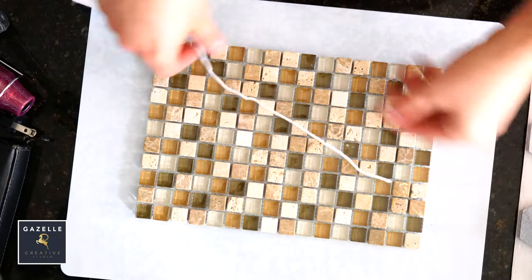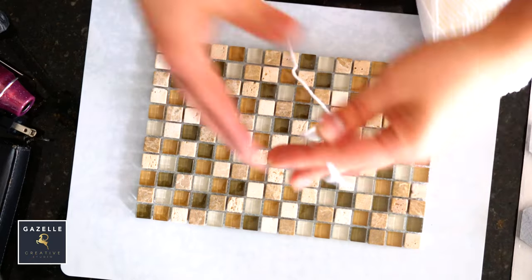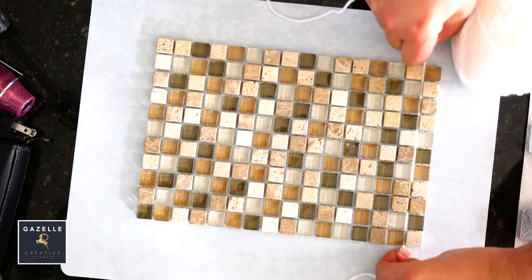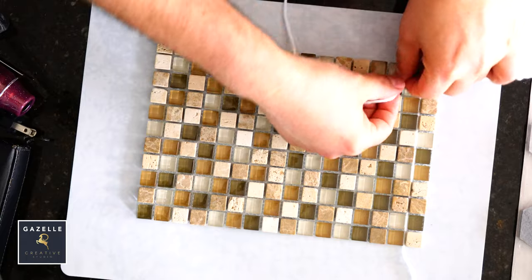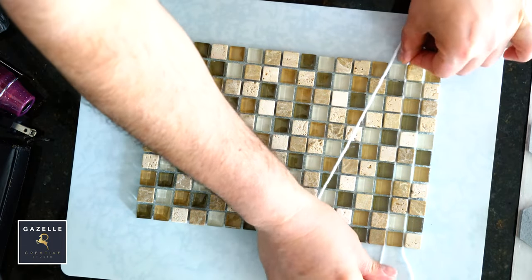I will place some yarn through the tiles vertically. Floss the tiles then pull. Make the yarn tight, but not super tight.